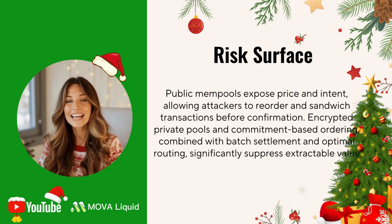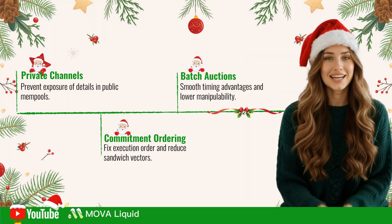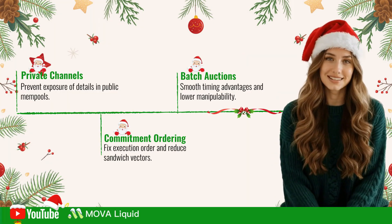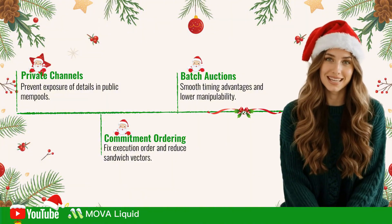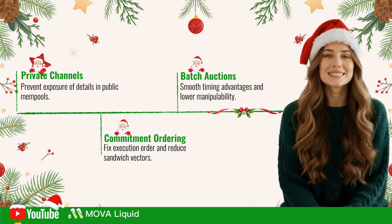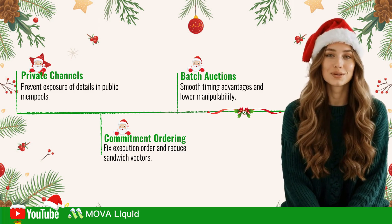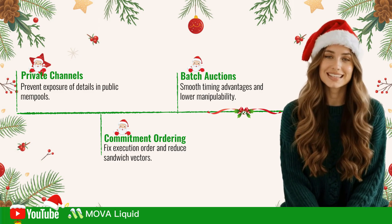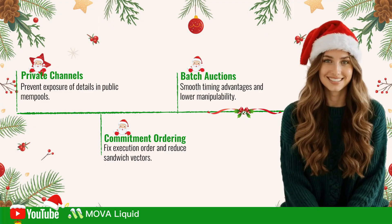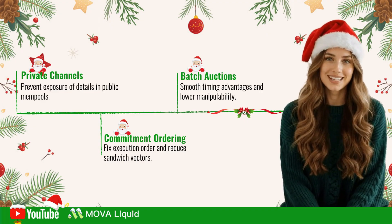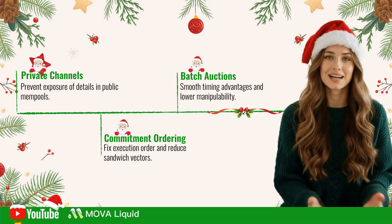As a result, attack profitability drops sharply. The channel layer hides transactions, the ordering layer locks sequencing, and the settlement layer smooths timing gaps through batching. When all three work together, attackers face higher costs for lower returns. The game stops being profitable, and the ecosystem naturally becomes healthier.